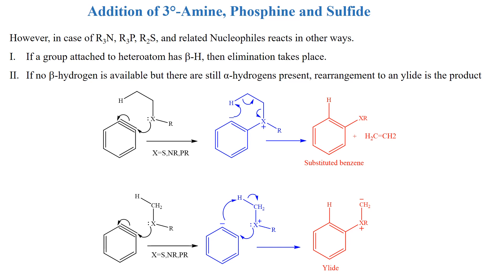First, if the group attached to the heteroatom has a beta hydrogen — as we can see, this group has a beta hydrogen — then the nucleophile will attack on the benzyne and benzyne will abstract a proton, thus eliminating a small hydrocarbon molecule to give substituted benzene.